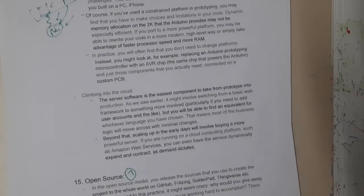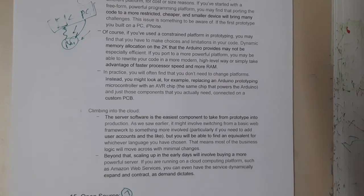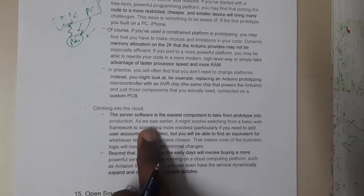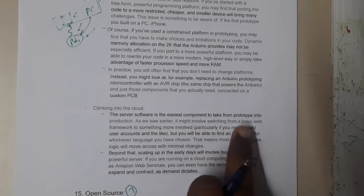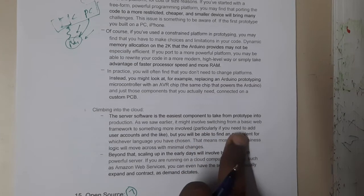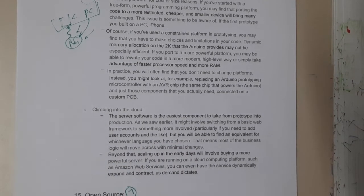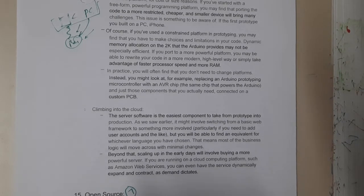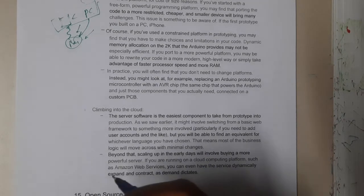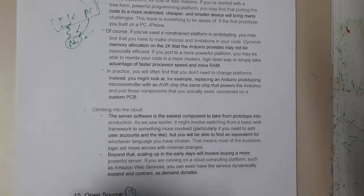Now let us go through climbing into the cloud. The server software is the easiest component to move from prototype into production. As we saw earlier, it might involve switching from a basic web framework to something more involved, especially if you need to add user accounts and the like. As you integrate more and more things into your cloud, you will get them gradually. Popular cloud platforms include Microsoft Azure and Amazon Web Services.